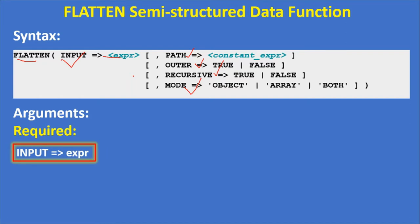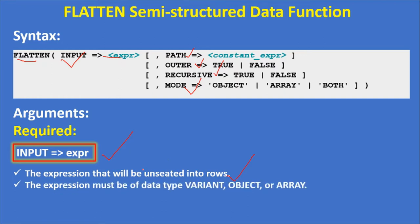The input parameter is the required argument. The expression will be expanded into rows — whatever you give as the input will be converted into rows. The expression must be of data type variant, object, or array. These are the three semi-structured data types accepted as input.